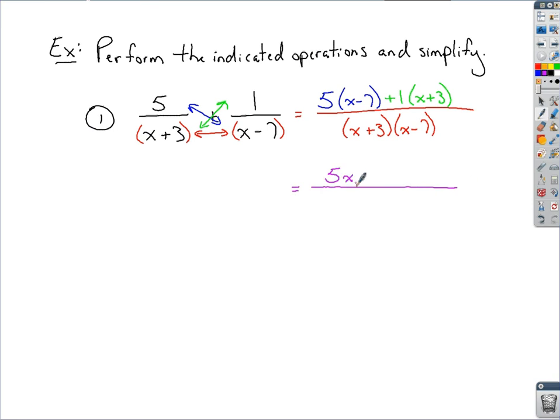You've got 5x minus 35. Distributing the 1, like I said, that's just going to leave us with the x plus 3.